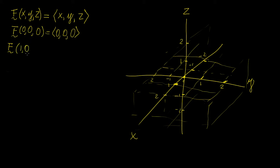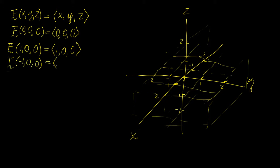Let's start with the point (1, 0, 0), which gives you this vector, and then let's draw something like (-1, 0, 0). Hopefully you can imagine what this is going to look like. If you think about the two-dimensional field that we drew, and you extend this to the third dimension by making the third component equal to z, you get an idea of what this is going to look like.